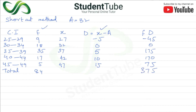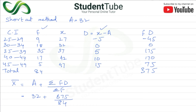Apply the shortcut formula: x̄ = a + (Σfd / Σf). Here a = 32, Σfd = 375, Σf = 84. So 375 ÷ 84 = 4.464. Therefore x̄ = 32 + 4.464 = 36.464. Mean is confirmed by both methods. Now we find median and mode.